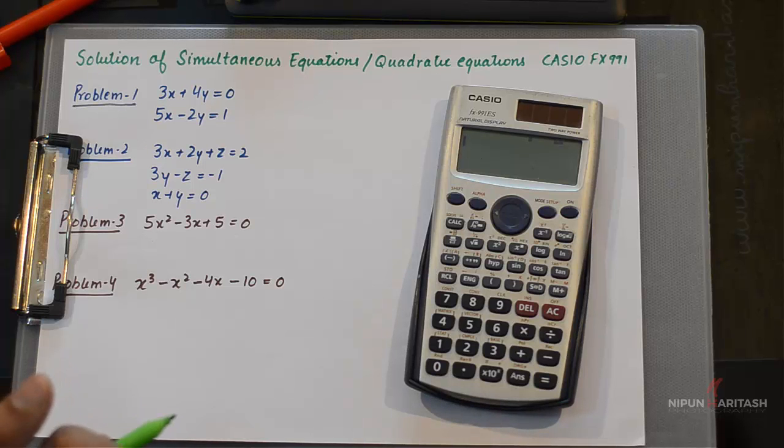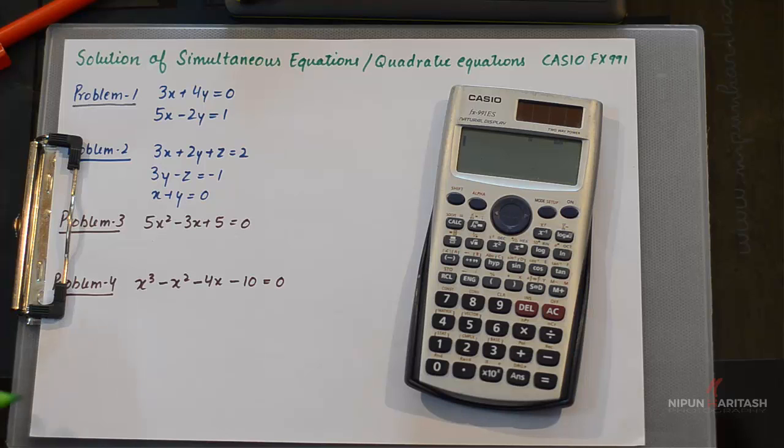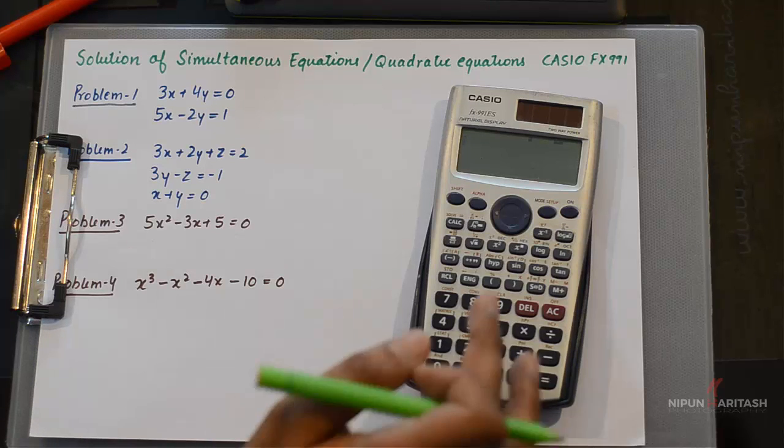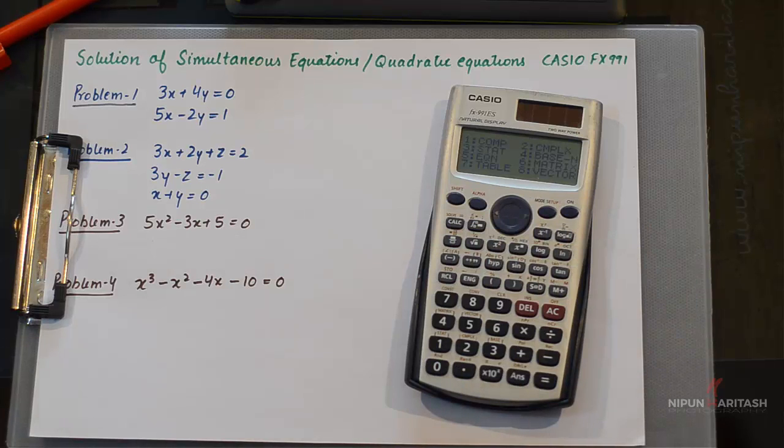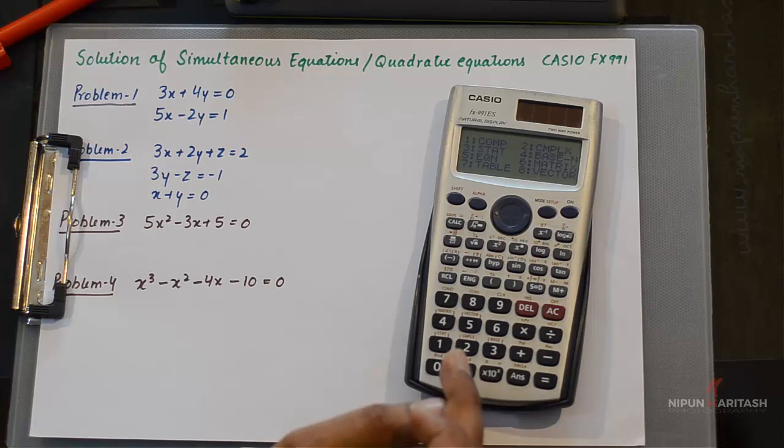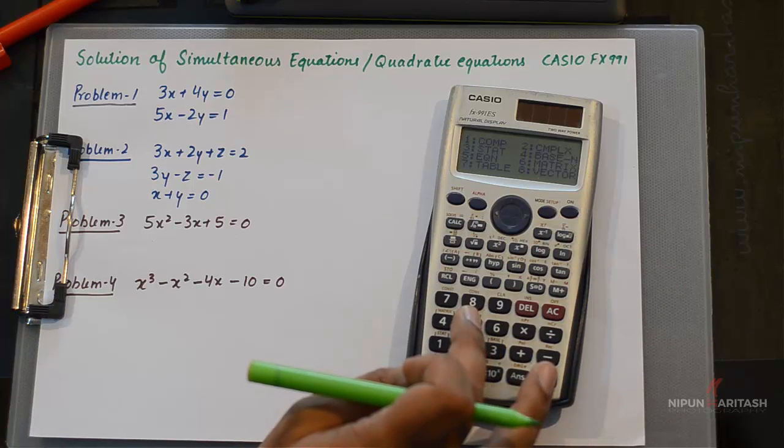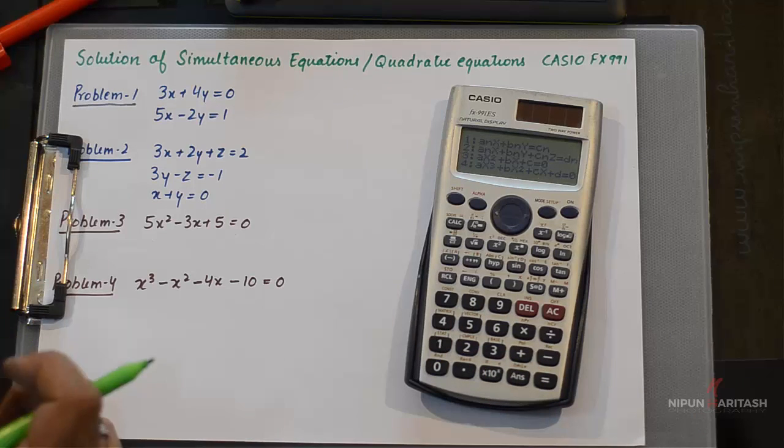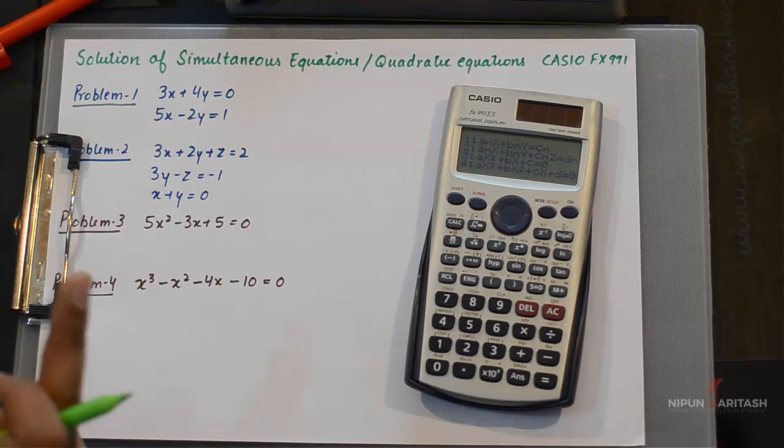In order to solve simultaneous equations or quadratic equations of degree 2 and 3, you need to press MODE and then press 5, which is equation. Now you get four types of equations that you can solve.